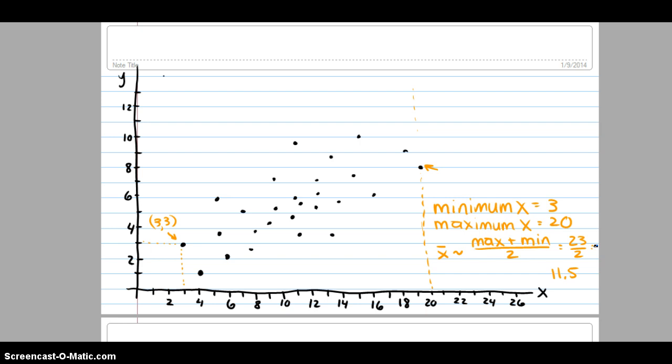Now we want to do the same thing for y. We want to find the minimum y. And notice this point has the smallest x, but he doesn't have the smallest y. There's a point that's lower. This guy has the smallest y value. And the minimum y is 1.